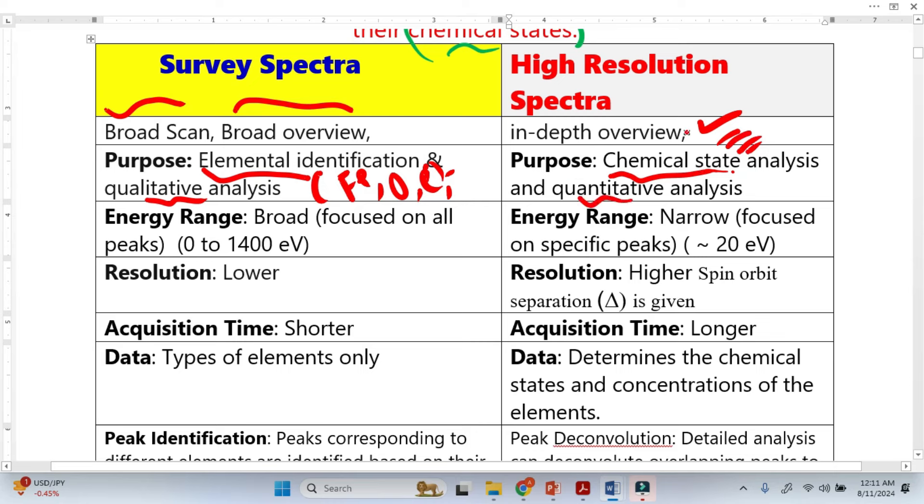We can clearly see that this peak contains more number of atoms and this contains less number of atoms, so quantitatively we are now clear about this. We've seen the energy ranges from zero to 1400 eV.